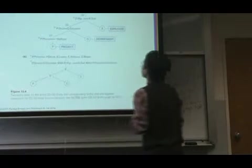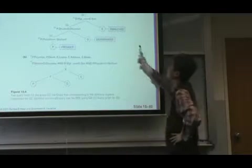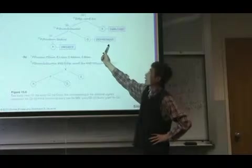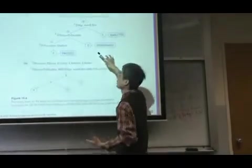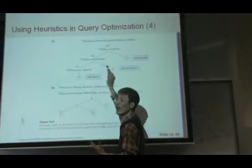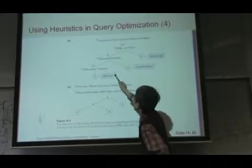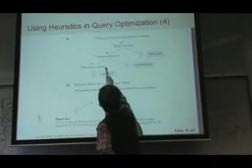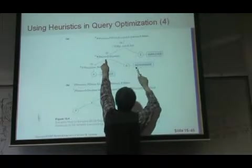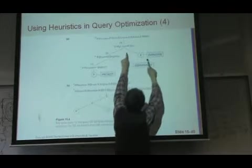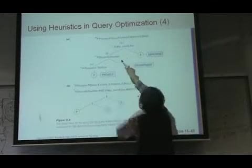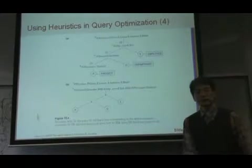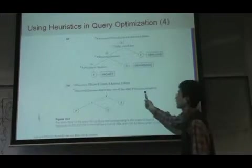It's the same example. So first, this is called the query tree based on the relational algebra. It's a different notation to represent your relational algebra expression. For example, project is P, project. You can select the data for Stafford. Then join with the department, then join with the employee. Then finally project P number, D number, name, and first date.